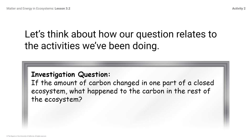Let's think about how our question relates to the activities we've been doing. If the amount of carbon changed in one part of a closed ecosystem, what happened to the carbon in the rest of the ecosystem? Carbon moves constantly through different parts of an ecosystem. The article we read in the last lesson discussed how this happens. In the warm-up, you thought about whether an increase in one part of the ecosystem meant that there would be an increase in the total amount of carbon in an ecosystem.